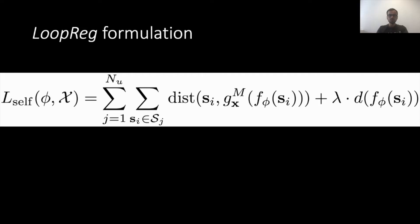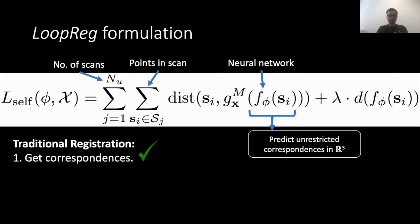We formulate LoopReg as a self-supervised data to model to data loop. The training objective loops over all the unlabeled scans and for each scan point sᵢ, our network f predicts its correspondence to the diffused body model in R³.